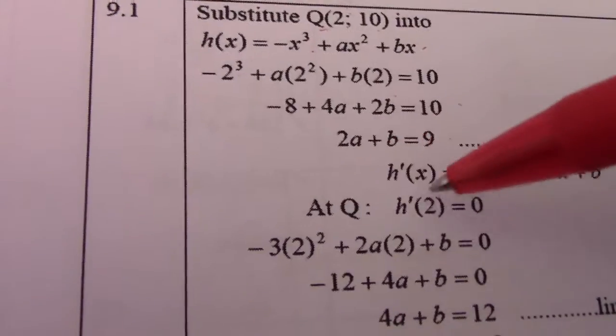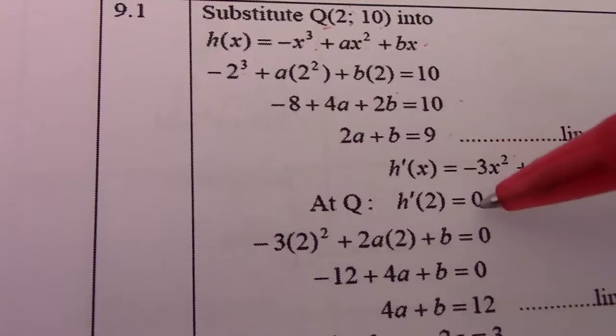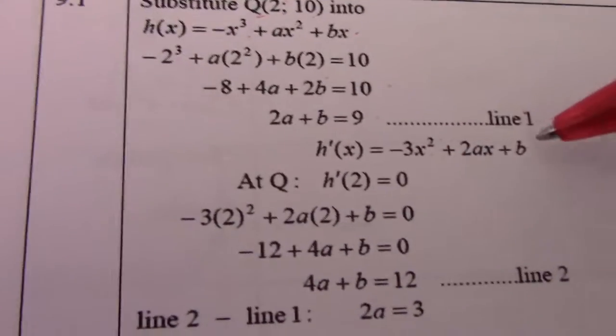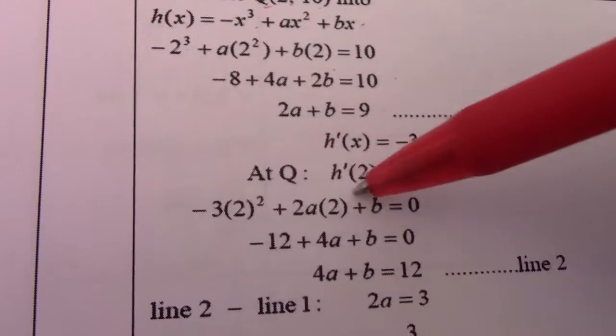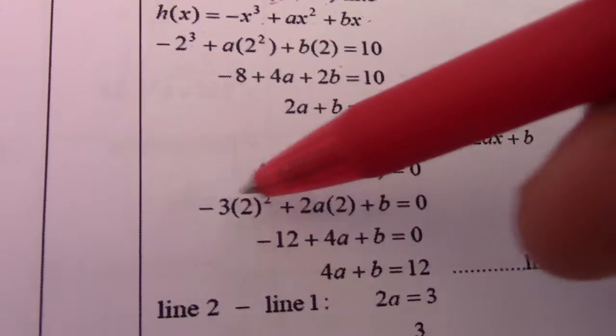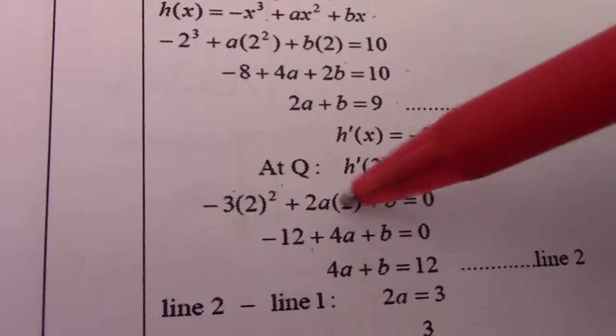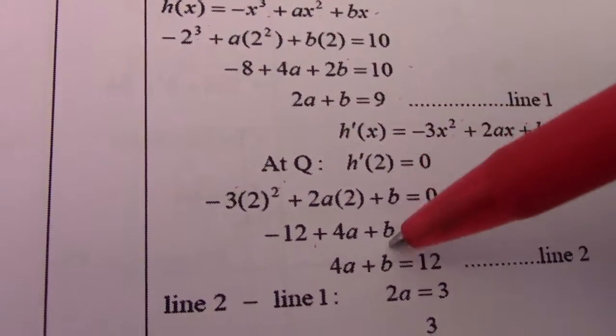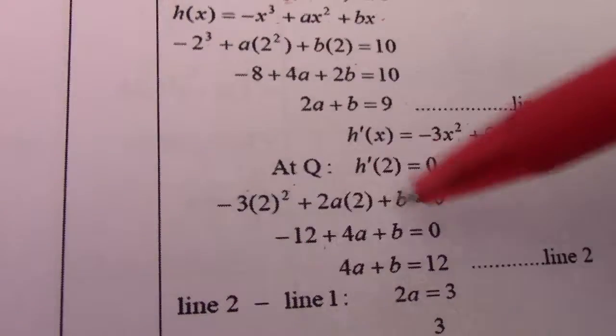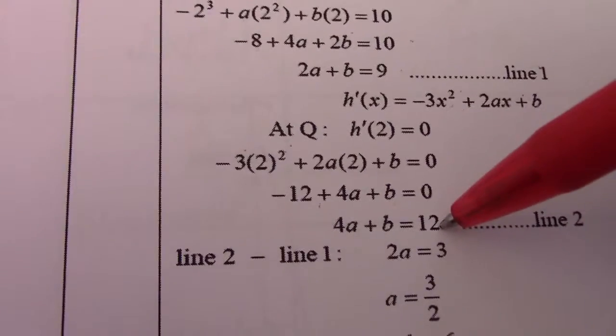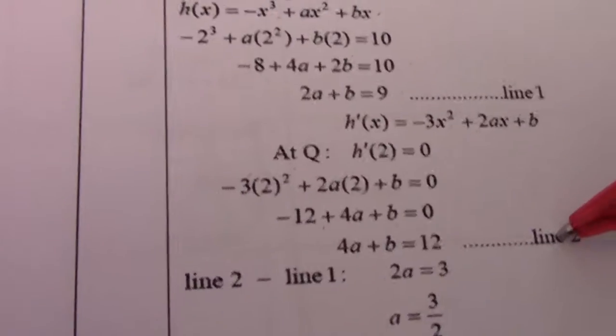At Q, h'(2) = 0. Substituting x = 2: -3(2)² + 2a(2) + b = 0, giving -12 + 4a + b = 0. Taking -12 across gives 4a + b = 12. That's equation 2.